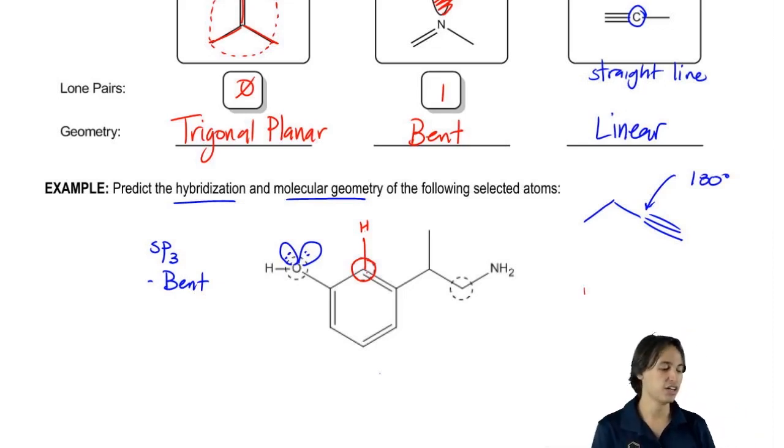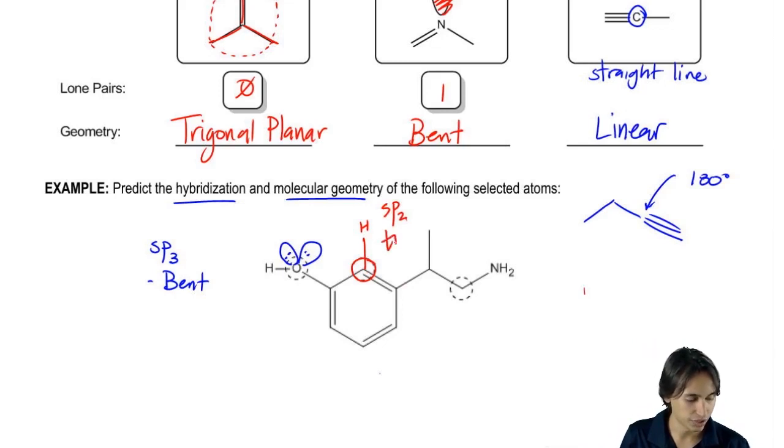So the bond line structure means there's an H there, so now I know that I have three bond sites and there's no lone pairs. So this is just going to be sp2 and it's going to be trigonal planar.